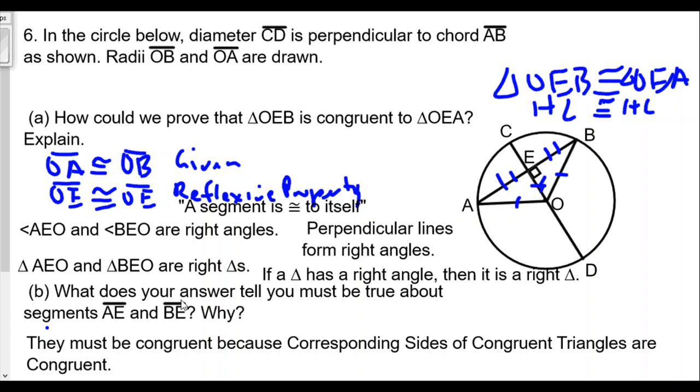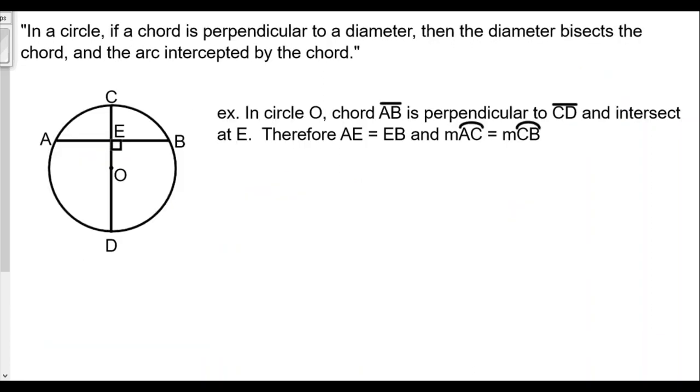The key theorem here is: in a circle, if a chord is perpendicular to a diameter, then the diameter bisects the chord and the arc intercepted by the chord. Chord AB is perpendicular to CD, and CD is a diameter. Therefore, that diameter will bisect the chord, so AE is congruent to BE. The arc AC is congruent to arc BC as well. The diameter bisects the chord, but the chord does not bisect the diameter.